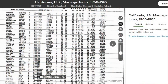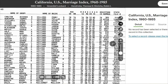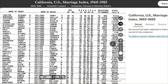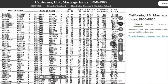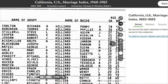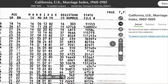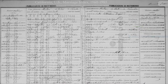An example of a derivative source would be a marriage index. The information provided in a marriage index is extracted from the marriage certificate, which is the original source of information. A derivative source relies on information from other sources, meaning there's more room for error within these types of records. The further removed information becomes from its original source, the more opportunity there is for potential error. Due to the higher risk of error, derivative sources are more prone to inaccuracies than original sources and should be evaluated with that in mind.